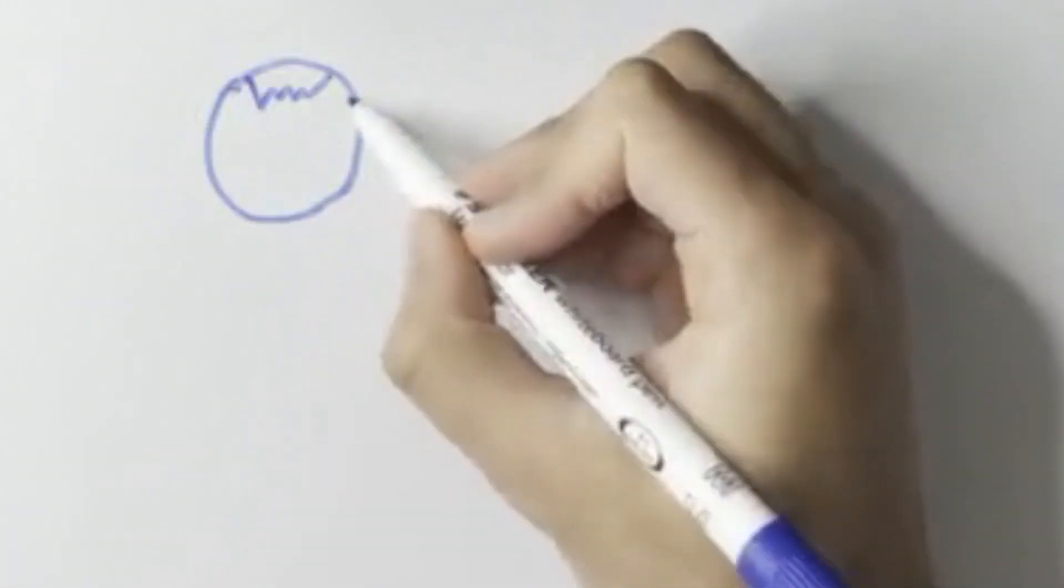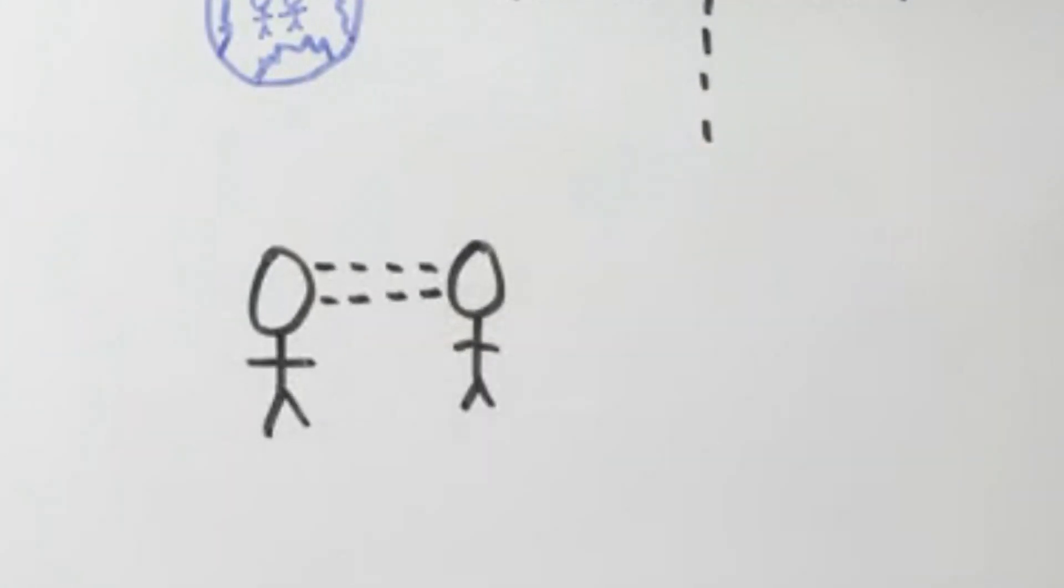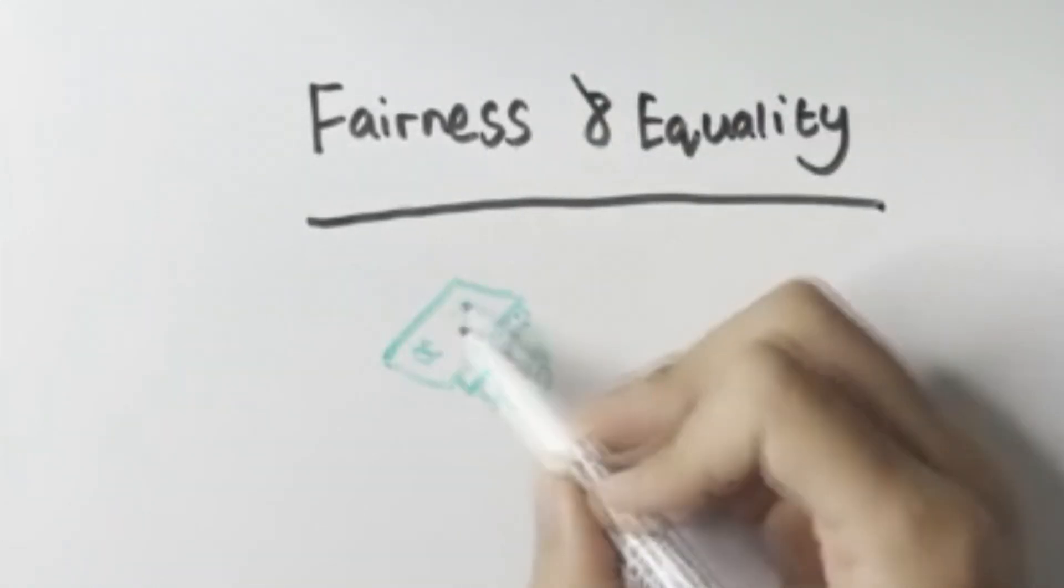So what do these experiments teach us? They teach us that humans are far from perfectly rational people, and that we're good at anticipating each other's emotions, and that's a good thing. It means more than just caring about objective profit, we also value ideas such as fairness and equality.